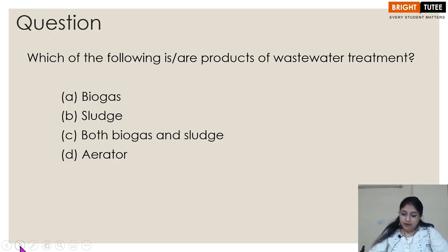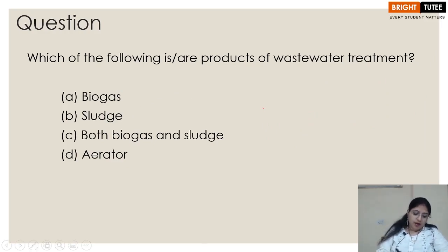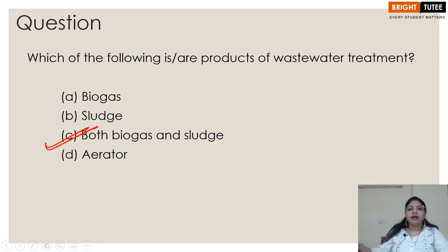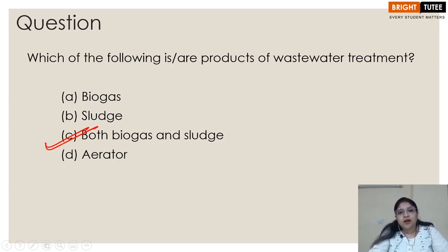Which of the following are the products of wastewater treatment — biogas, sludge, both biogas and sludge, or aerator? The answer is both biogas and sludge are the products of wastewater treatment.